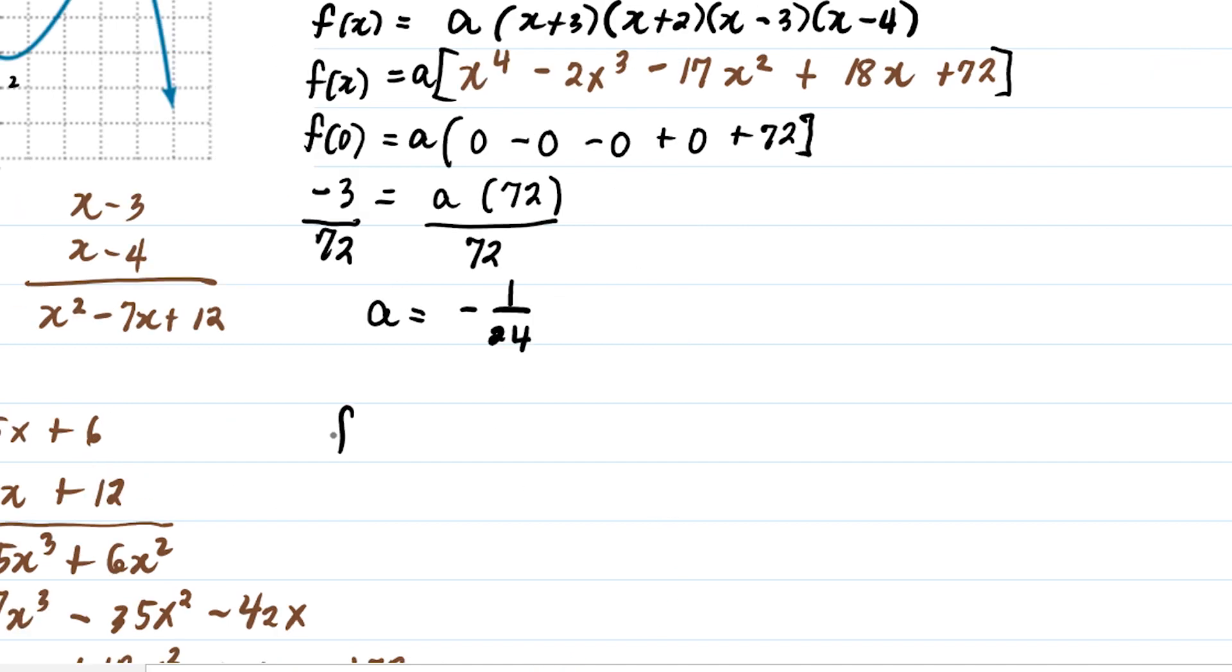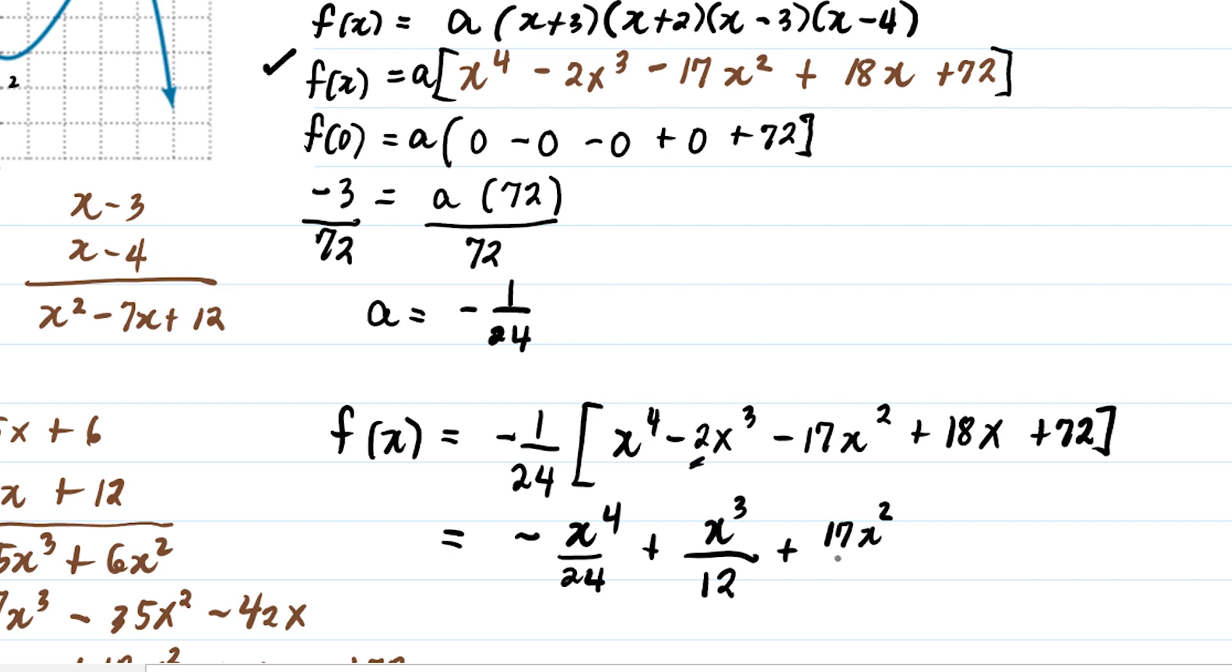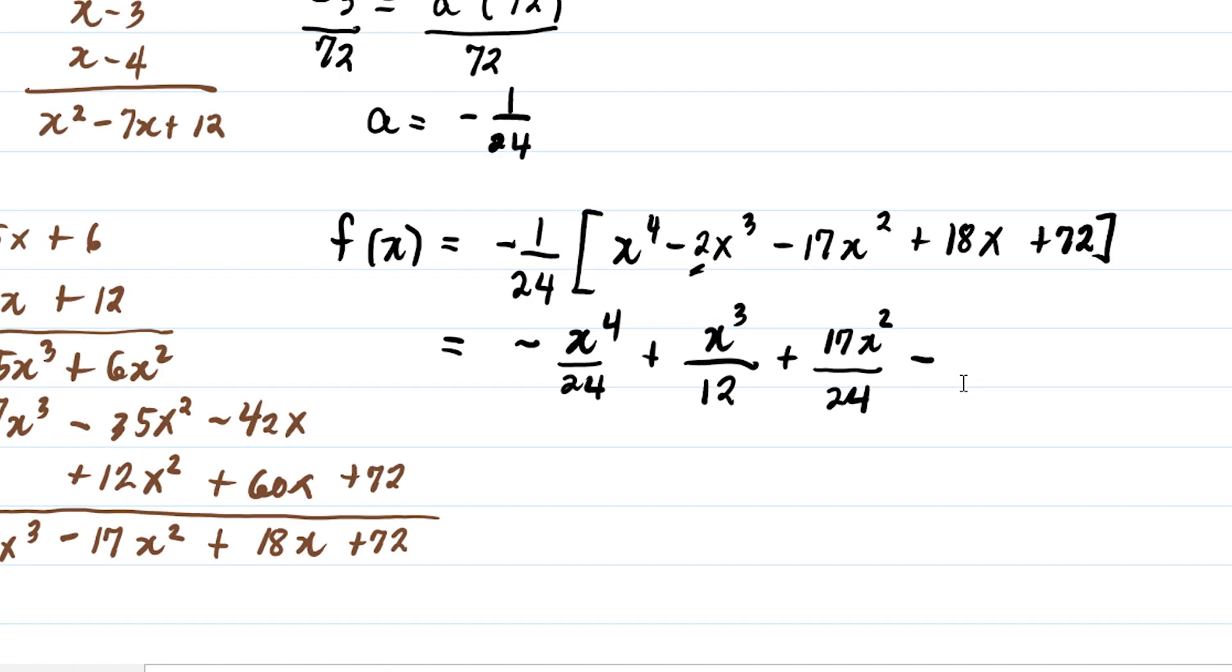Since our a is negative 1 over 24, let's go back to our function. Substitute: we have minus 1 over 24 times x to the 4th minus 2x cubed minus 17x squared plus 18x plus 72. Dividing everything by 24: negative x raised to 4 over 24, plus x cubed over 12, plus 17x squared over 24, minus 3x over 4, minus 3. Therefore, the polynomial function based on the equation is this.